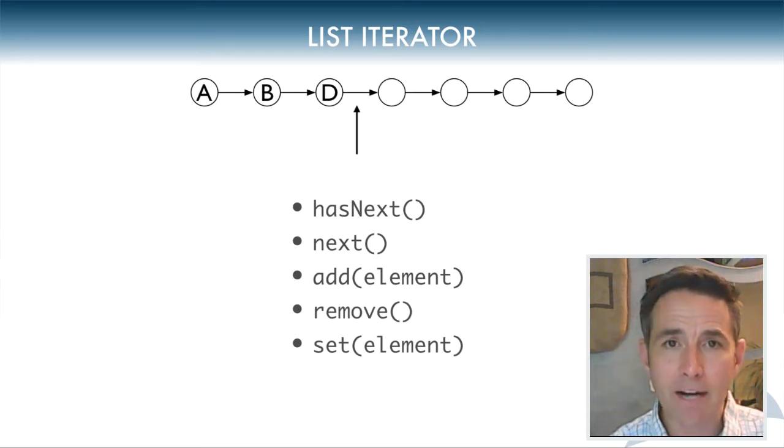Those are the abstract things that you can do with any implementation of the list that we're going to build. There are two kinds of lists that we're going to build, then.